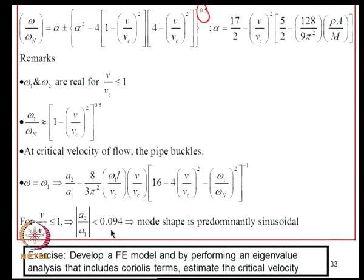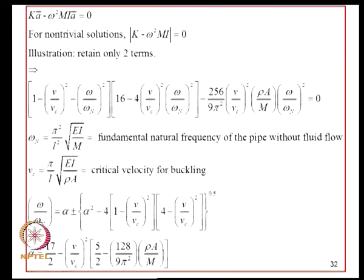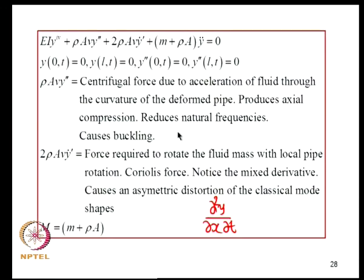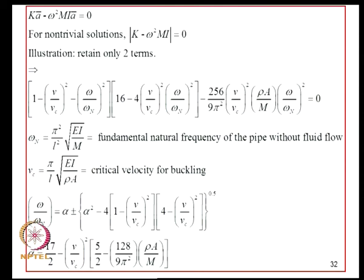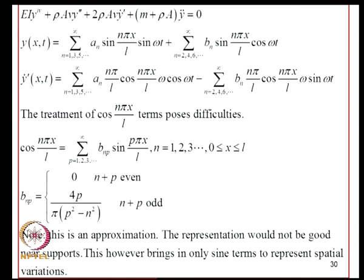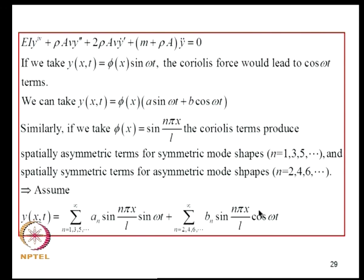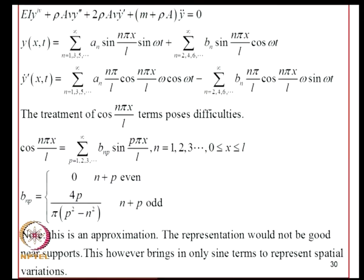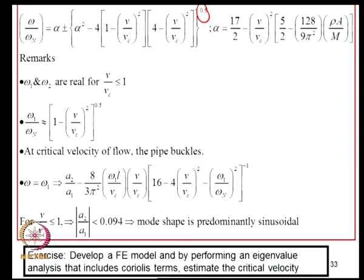Results from this formulation have been compared in the Blevins book with experimentally observed data and reasonable comparisons have been found. As an exercise: starting with this governing equation, develop a finite element model and perform an eigenvalue analysis that includes Coriolis terms to estimate the critical velocity. This avoids ad hoc assumptions on mode shape selection and boundary condition violations — the finite element model itself reveals the relationship between complex-valued natural frequencies, mode shapes, and flow velocity.